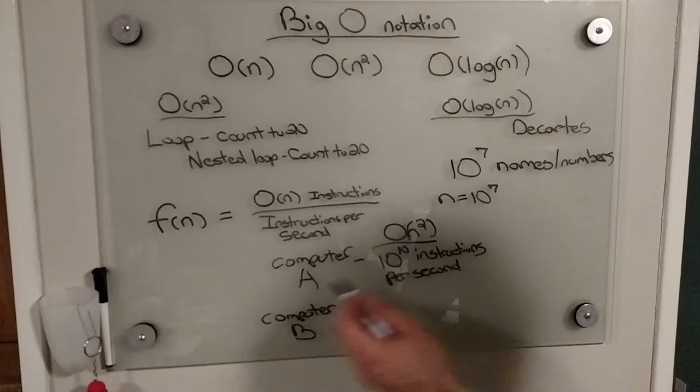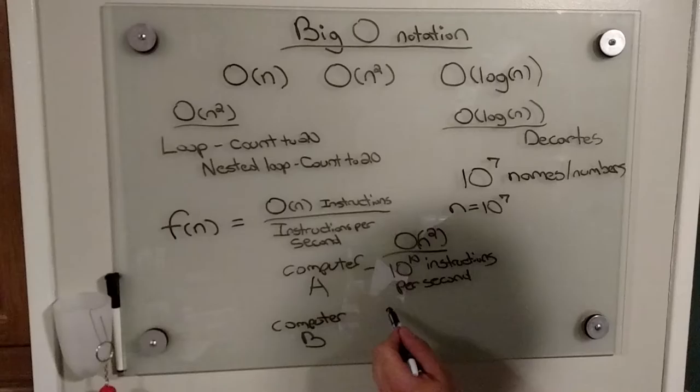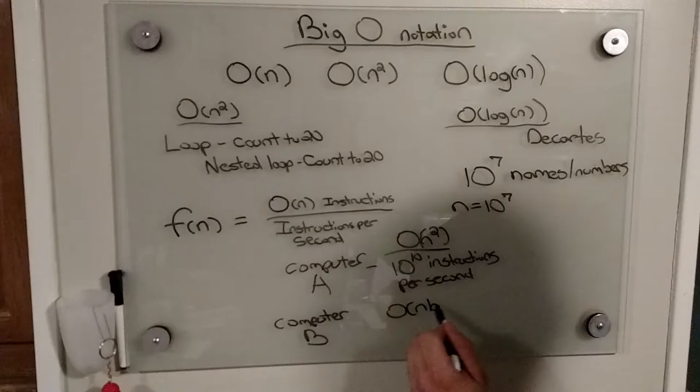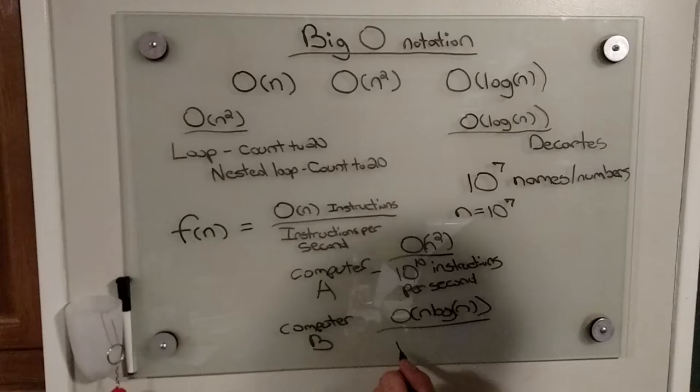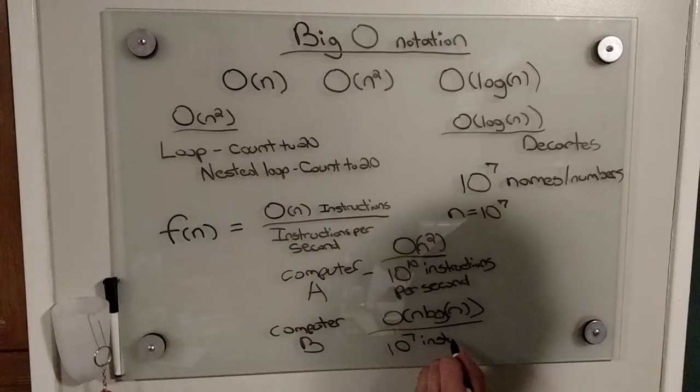And then we'll have computer B, which this one's running O(n²) on computer A. For computer B, we'll actually be running a much more efficient code, which will be O(log n).